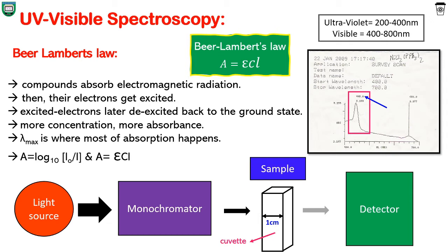Absorbance A is equal to log I₀ divided by I, where I₀ is incident light and I is transmitted light. Beer-Lambert's law: A is equal to ε C L, where A is the absorbance, ε (epsilon) is molar absorptivity, C is the concentration, and L is the path length of the cuvette, which is usually 1 cm.